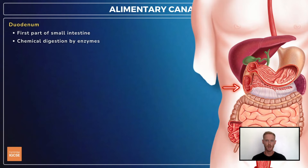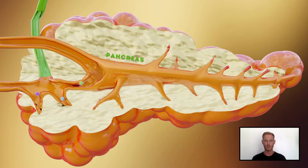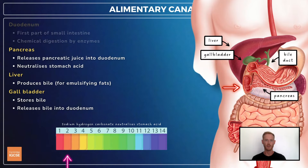From the stomach, the liquid products pass through a valve and into the duodenum, the first part of the small intestine. The duodenum receives pancreatic juice from the pancreas and bile for the emulsification of fats. Bile is made in the liver and stored in the gallbladder. Pancreatic juice contains amylases, proteases and lipases for the breakdown of carbohydrates, proteins and fats, as well as sodium hydrogen carbonate, which neutralizes the acidic liquid from the stomach, allowing the pancreatic enzymes to function optimally.